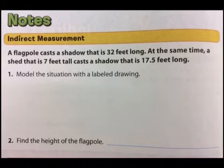Now on the next page, we're going to find an indirect measurement, meaning we're going to find a measurement that is not directly provided for us, but we're going to use another measurement and its proportionality to find the missing measurement. This is called indirect measurement. Remember, a flagpole casts a shadow that is 32 feet long. At the same time, a shed that is seven feet tall casts a shadow that is 17.5 feet long.